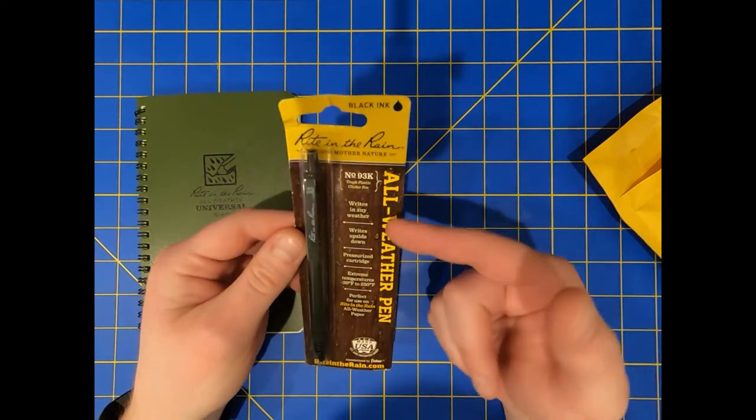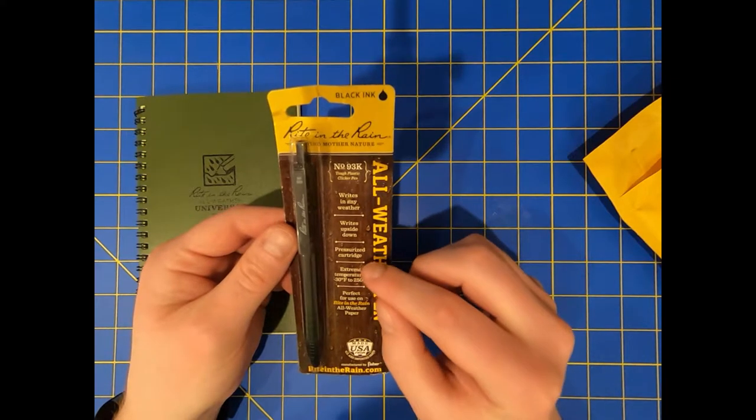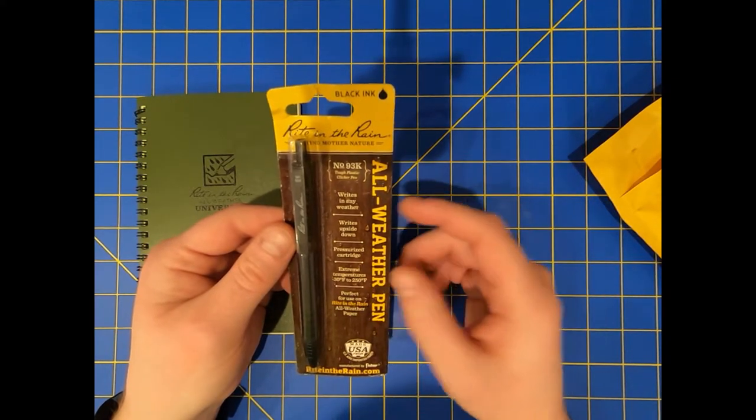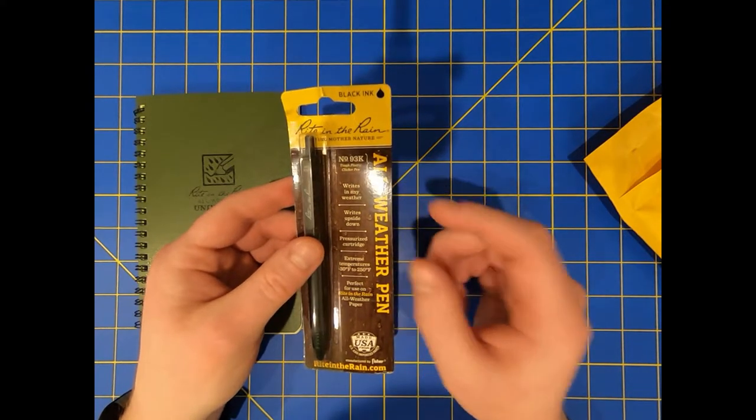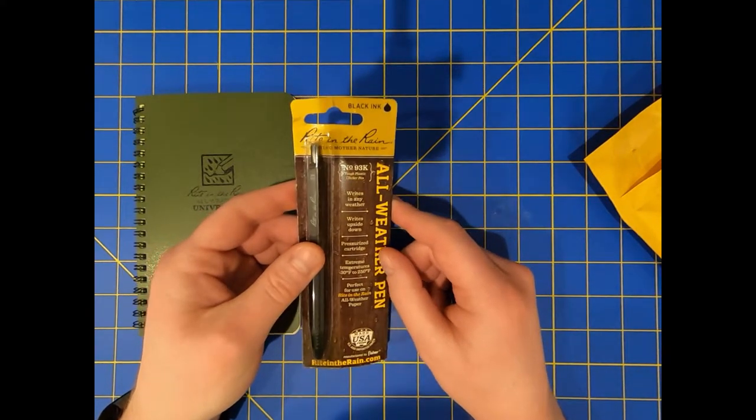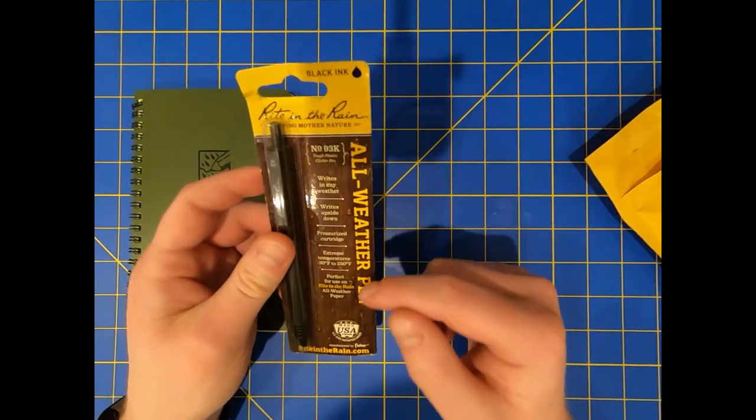So this is a pressurized pen. Yeah, it writes any weather. Writes upside down. Pressurized cartridge. Extreme temperatures up to negative 30 degrees Fahrenheit. 250 degrees Fahrenheit. That is... Wow. 250 degrees Fahrenheit. I guess it's nice if you're like in Arizona and you leave this in a car. It's not gonna explode. Awesome.